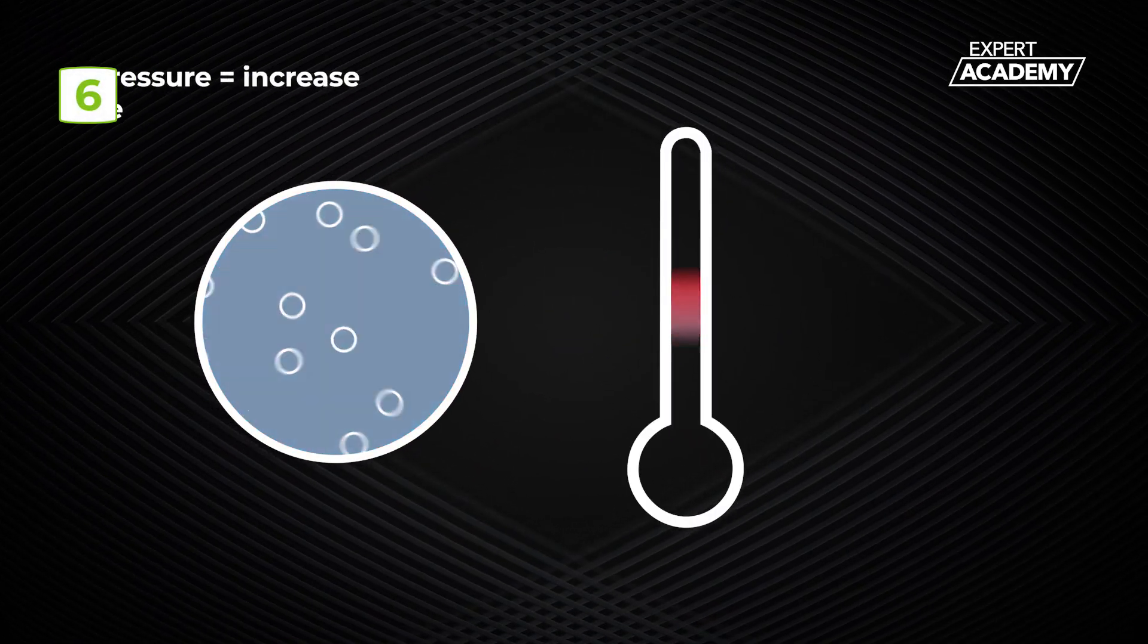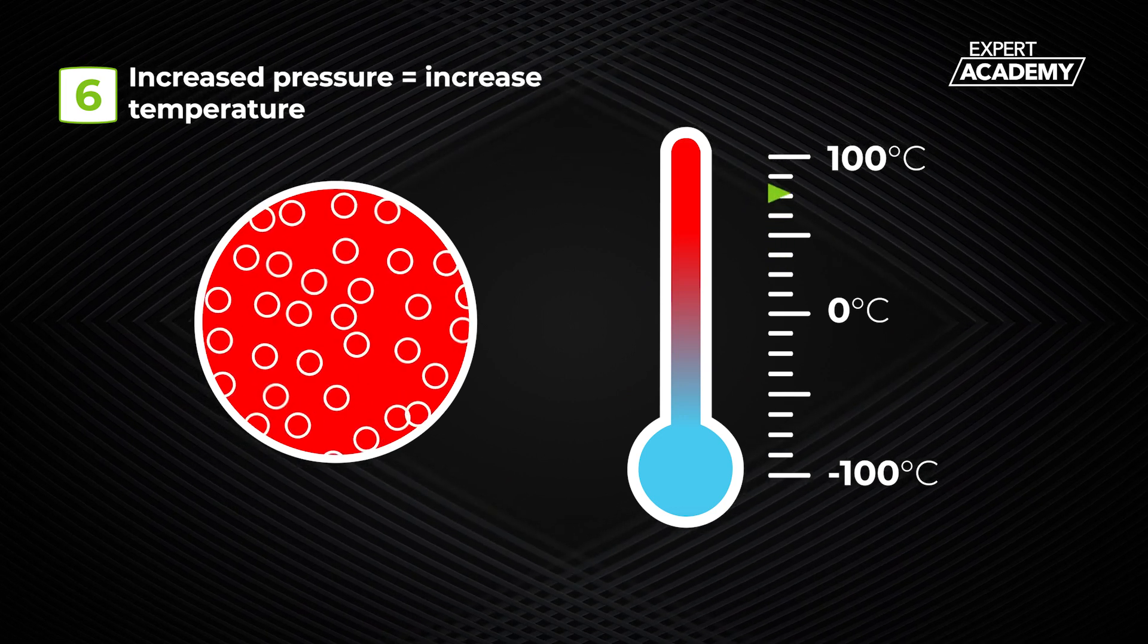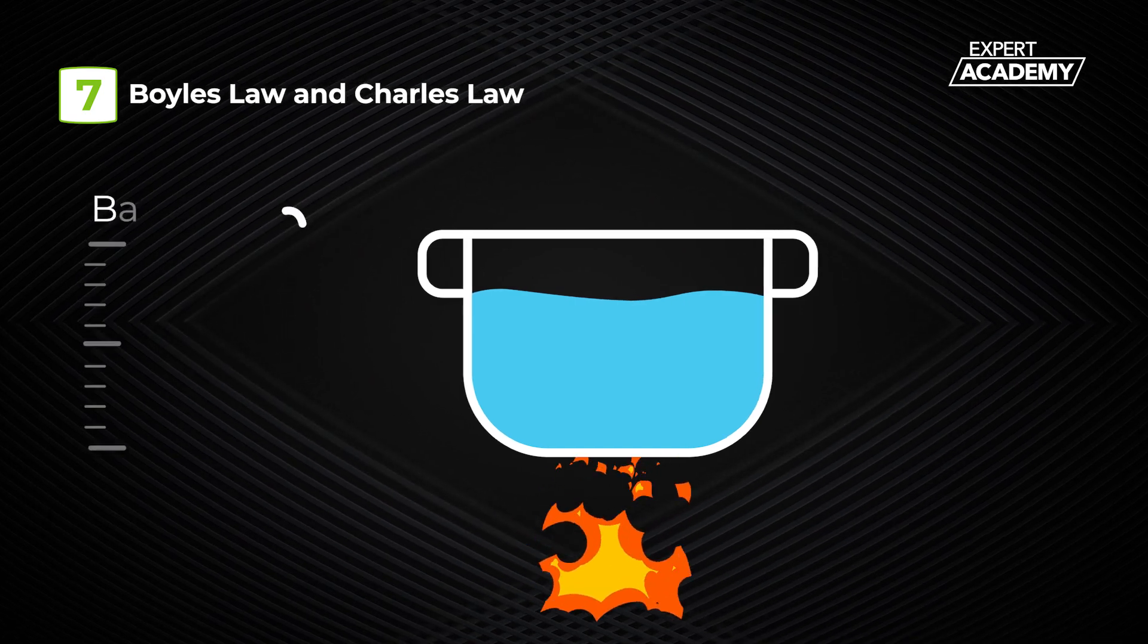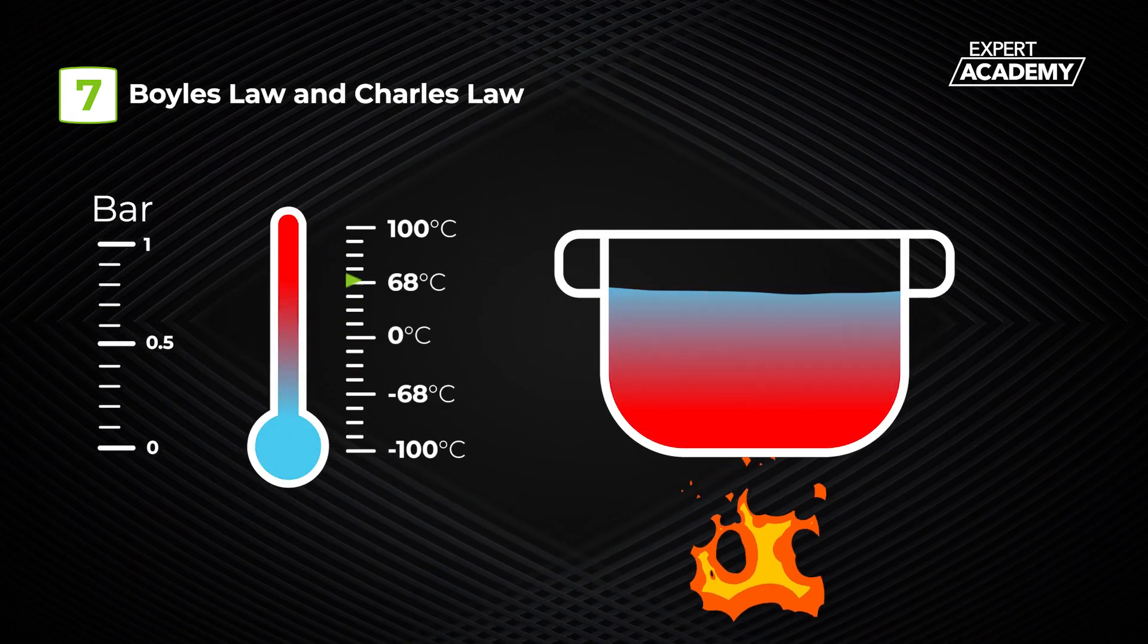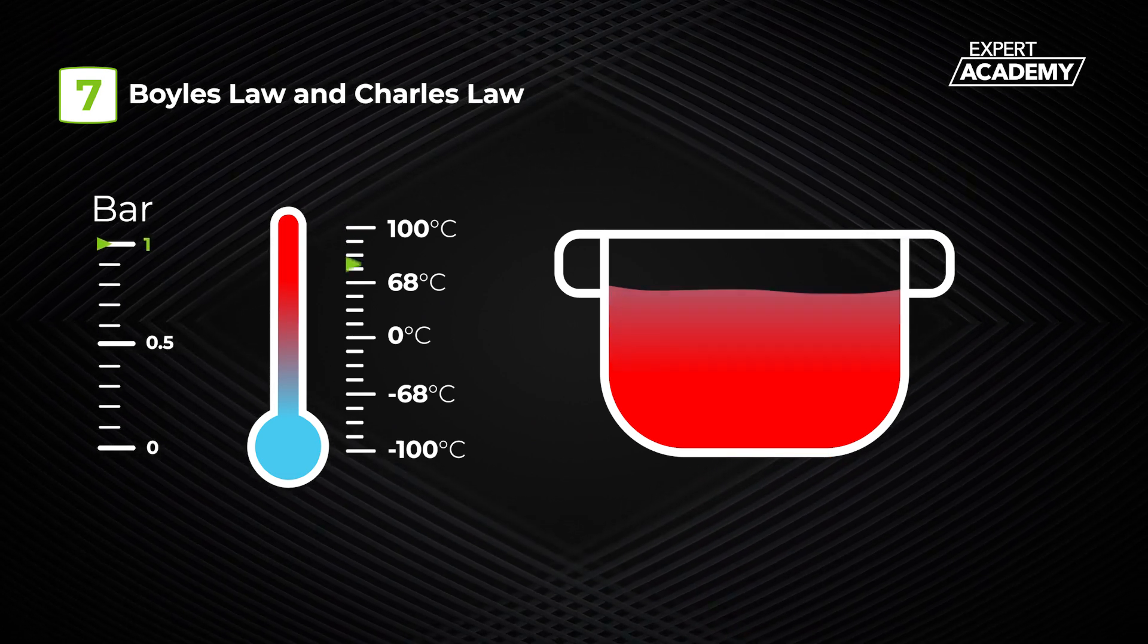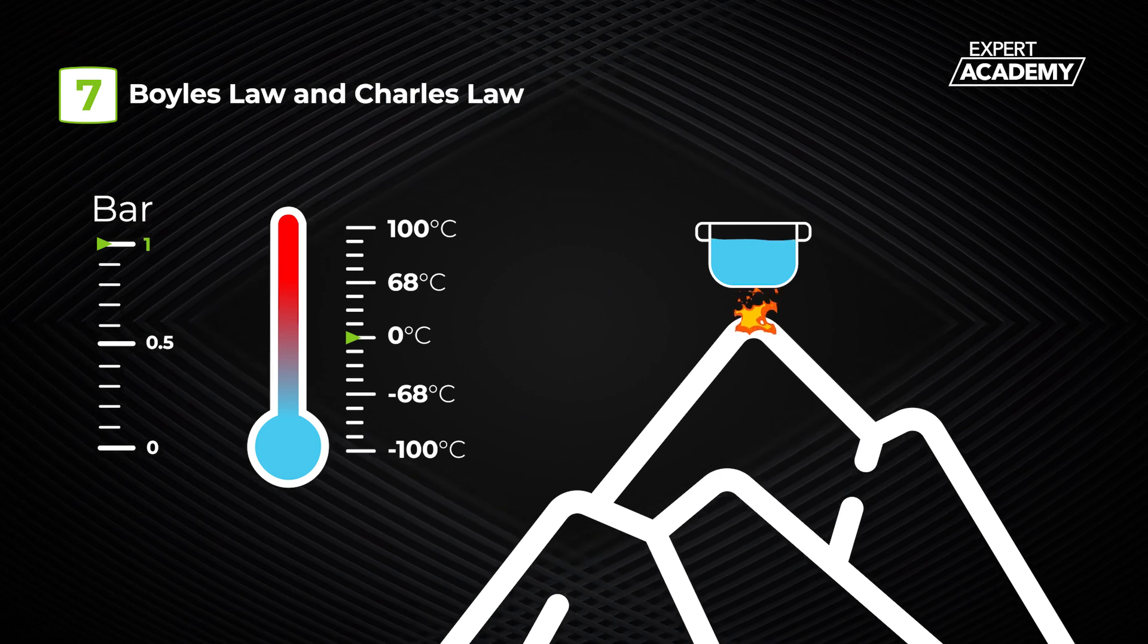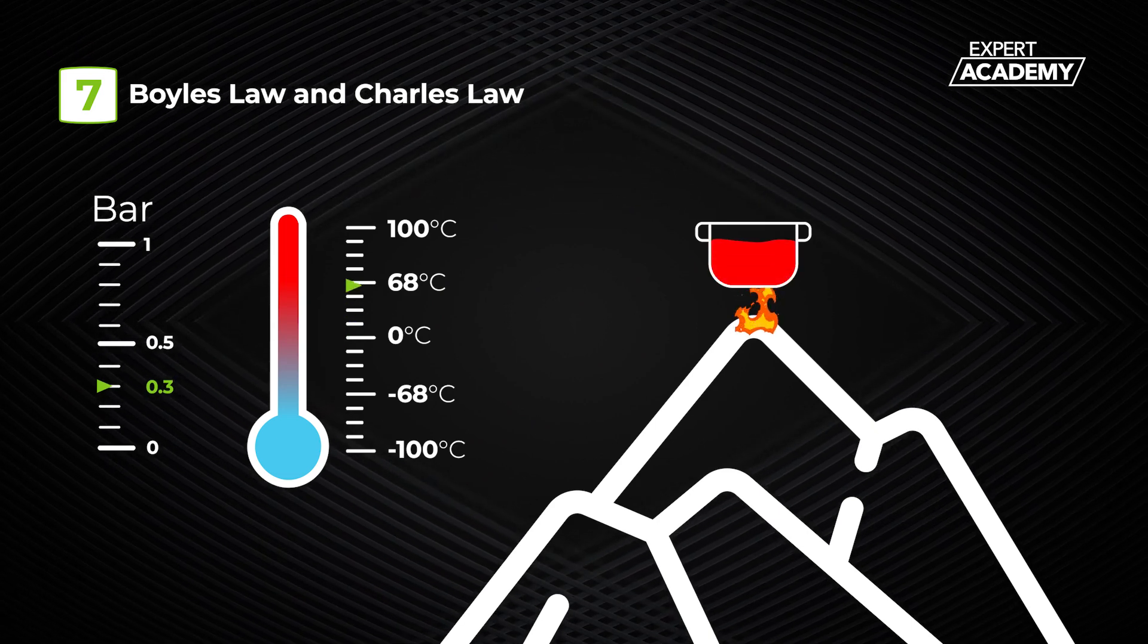Number six: if we compress a gas it increases in temperature. Increased pressure equals increased temperature. Number seven: the boiling point of a liquid depends on its pressure. Water for example boils at a hundred degrees C under normal atmospheric pressure, considered to be one bar at sea level. At higher altitudes air pressure is reduced. As an example, Mount Everest has a pressure of 0.3 bar which allows water to boil at 68 degrees C.